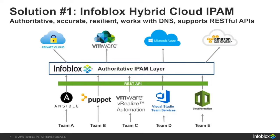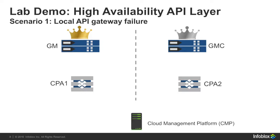One solution that we've come up with is to provide an authoritative IPAM layer with a REST API backend that any number of orchestration tools can speak towards, and we can then integrate with private and public cloud environments. In this demo, what I'll show you first is around local API gateway failure and how we handle that. We have a cloud management platform sitting at the bottom, and it is trying to send API calls to a cloud platform appliance sitting in either data center.